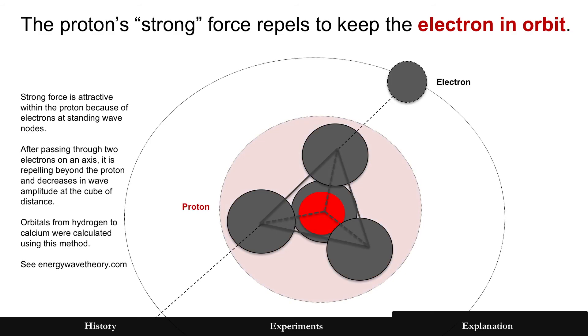But that force, that force that was keeping that electron in place in the first place, is axial. It only occurs between two of the tetrahedral electrons. Now, it's strong when it holds it together, because they're within the standing wave of the proton, but it repels, and it repels at the cube of distance beyond there. That forces the electron out at the same time it's being attracted by the positron in the middle.